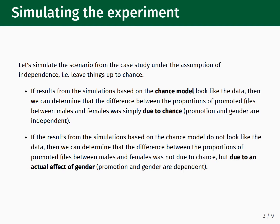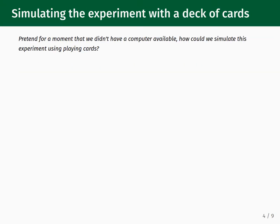If the results from the simulations based on the chance model look like the data, then we conclude that the difference in proportions of promoted files between men and women was simply due to chance. On the other hand, if the results from the simulations based on the chance model do not look like the data, then we conclude that the difference was not due to chance, and instead due to an actual effect of gender. Let's pretend for a moment that we don't have a computer available to do these simulations. How would I go about generating the null distribution?